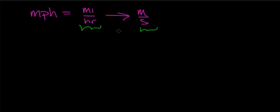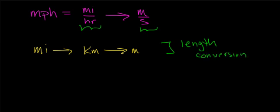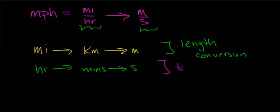We can do all of these conversions in a few simple steps, so let me outline those basic steps. I'm going to take a mile — since I don't know a direct relationship between the mile and the meter, I'll convert a mile to a kilometer and a kilometer to a meter. That's my length conversion process. Then I'm going to convert the unit of hours over to seconds. I know a relationship between hours and minutes, and then minutes and seconds, so that will be my time conversion.